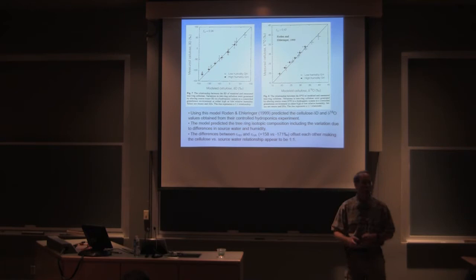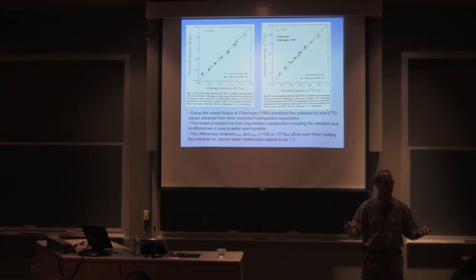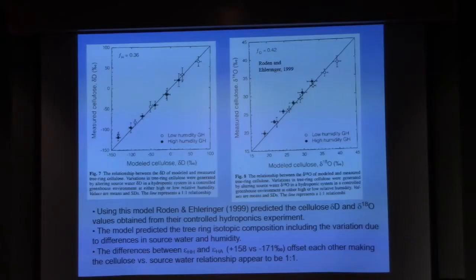The difference between the black and the white circles is humidity. I grew some in high humidity and low humidity. Can the model account for that? Yep. Okay.